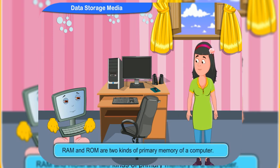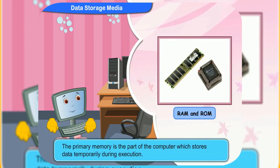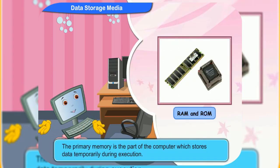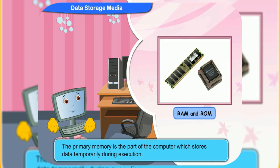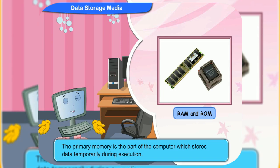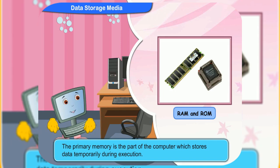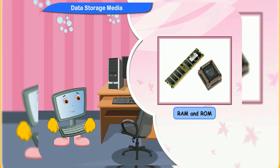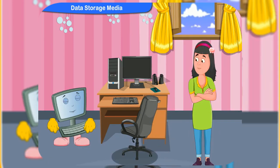RAM and ROM are two kinds of primary memory of a computer. Correct, Renny! The primary memory is the part of the computer which stores data temporarily during execution. The computer's primary memory lets us know about the amount of data that a computer can store in it. Since you already know that the primary memory is the RAM and ROM, let me tell you more about them.